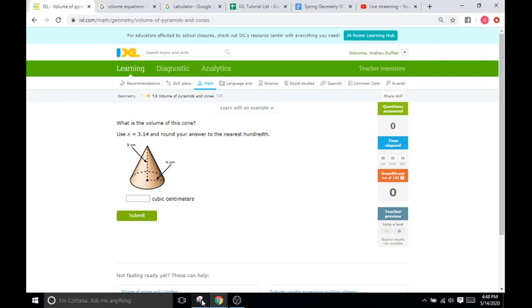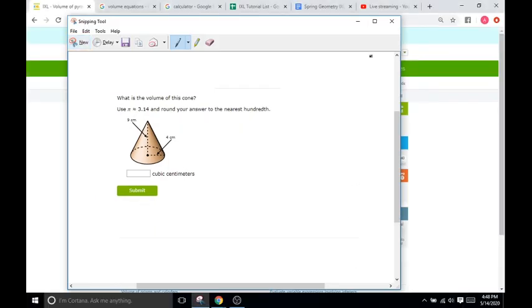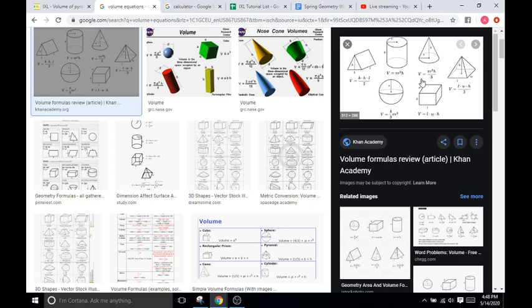So this first problem is asking to find the volume of this cone. I'm going to go back here and see the volume of a cone is going to be pi r squared times h. r being the radius of the circle down there, height being the height of the entire shape, and then divided by 3. So pi r squared and then h over 3.